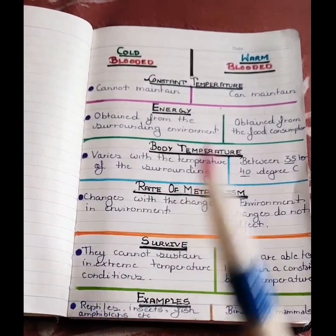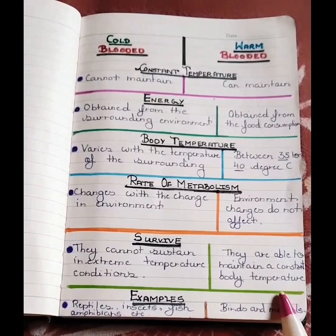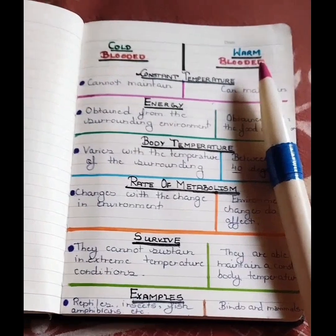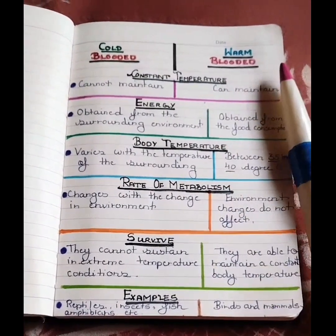Whereas warm-blooded includes birds and mammals. So this is all about cold-blooded and warm-blooded. See you in the next video. Thank you so much for watching. Bye.